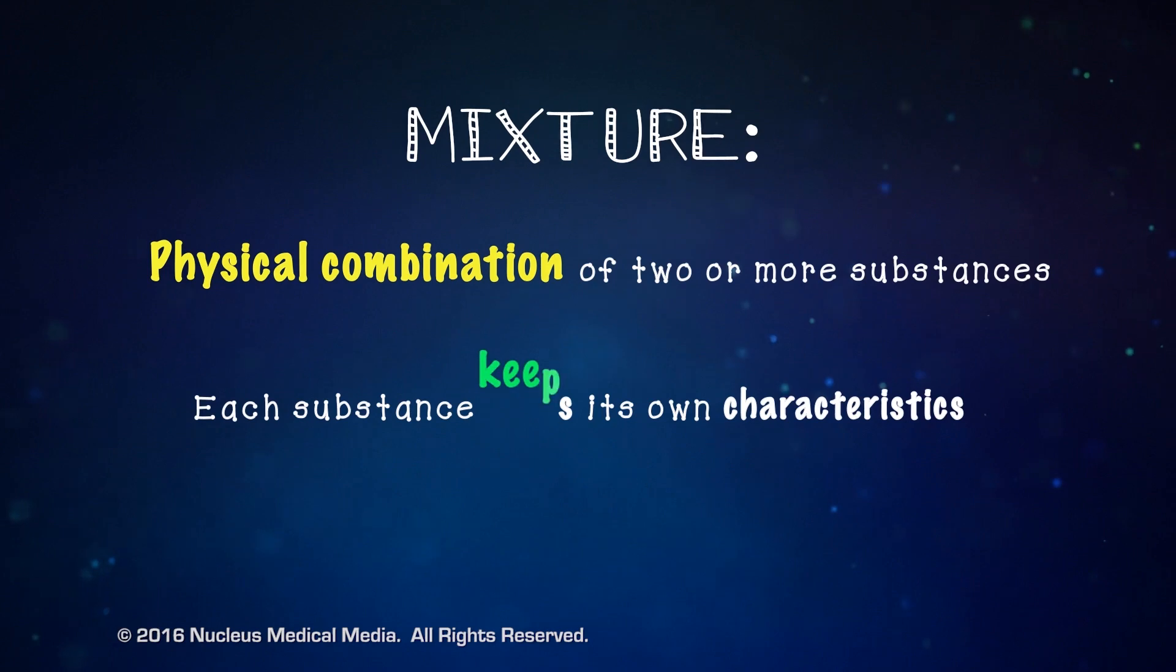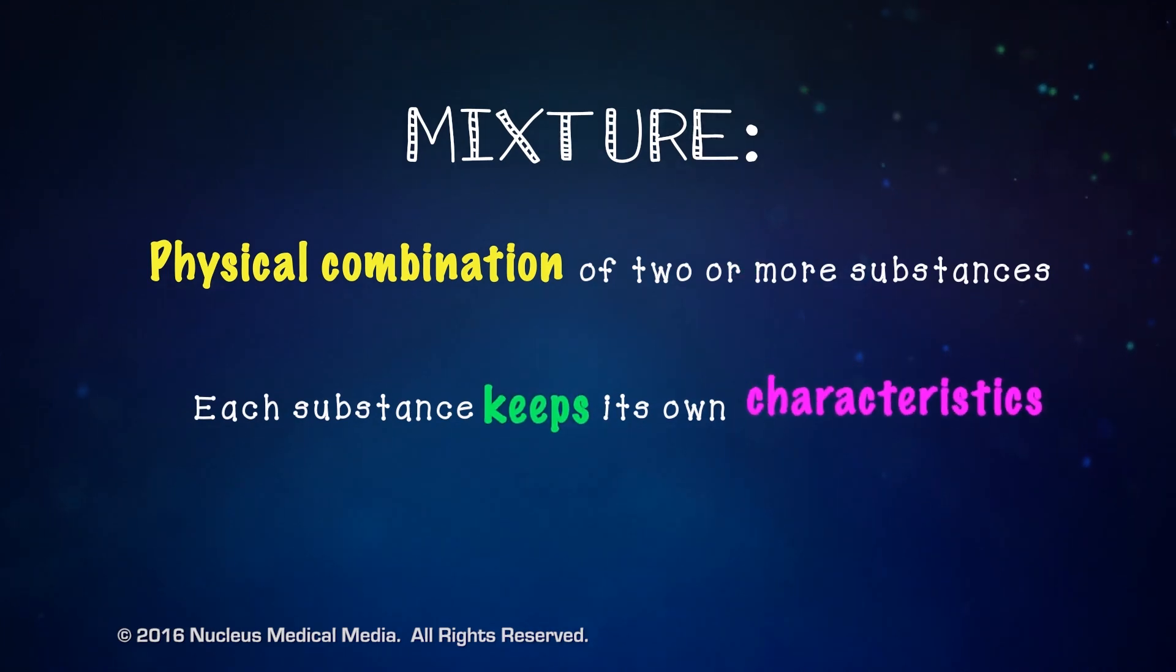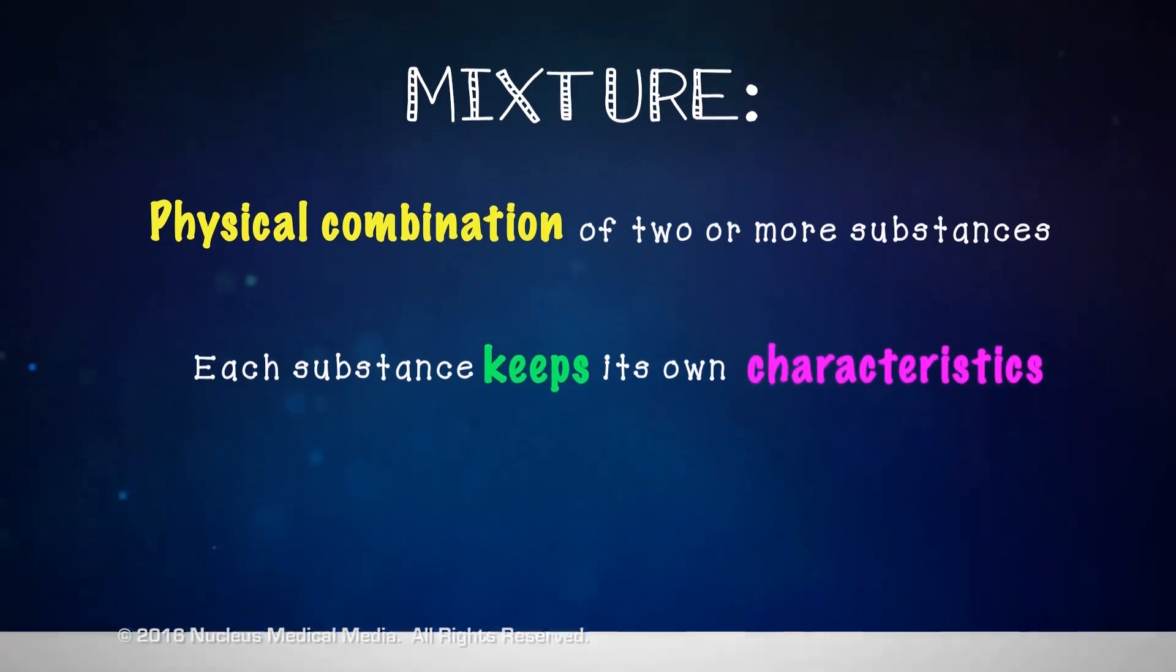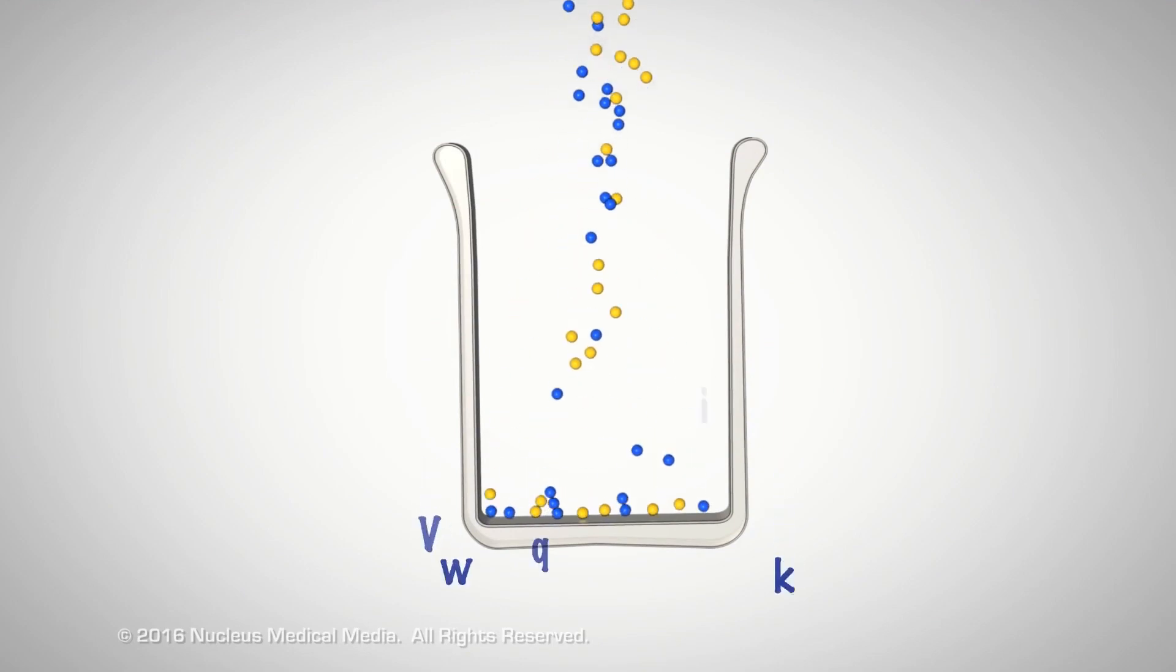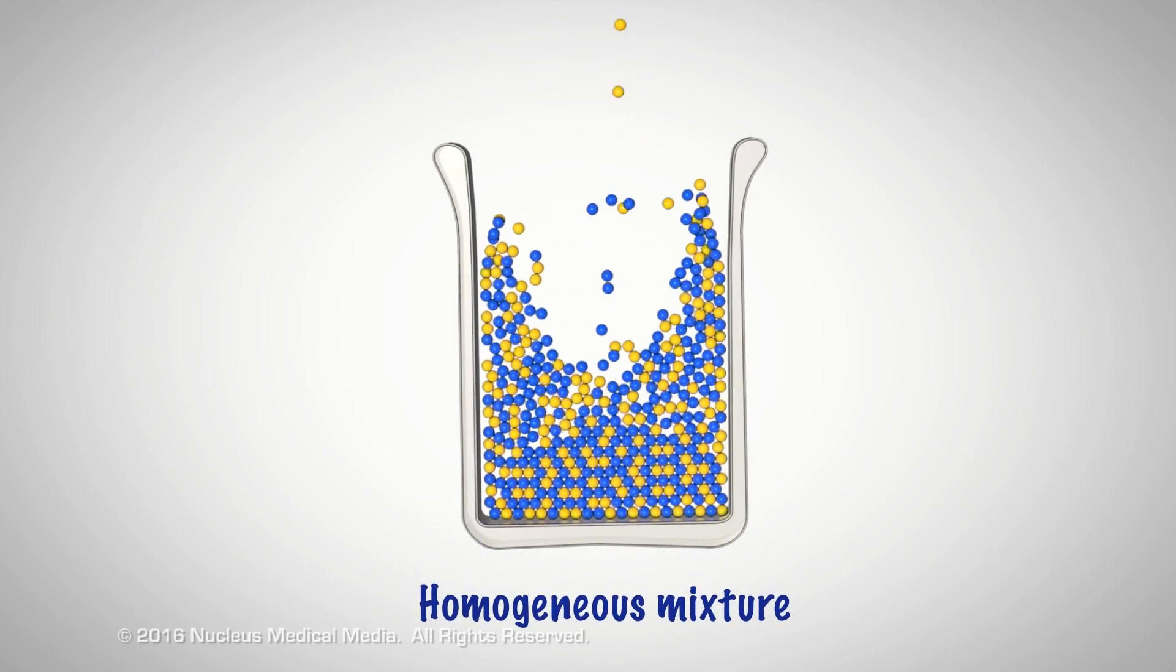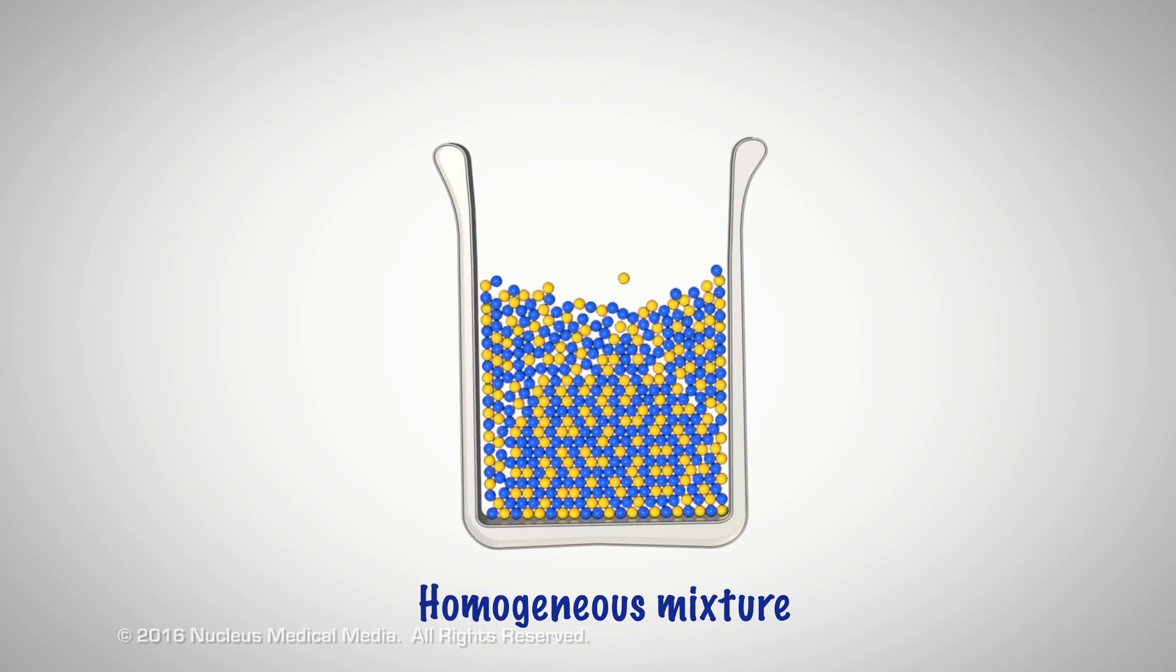Each substance in a mixture keeps its individual characteristics. A solution, also called a homogeneous mixture, consists of very tiny particles mixed so uniformly that the mixture has the same properties throughout.